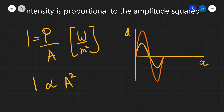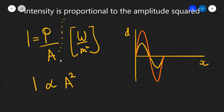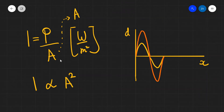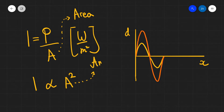Notice that unfortunately the symbol for area is exactly the same as the symbol for amplitude, and it will be really important not to confuse the two. In the equation above, A stands for area, and in the second equation — that intensity is proportional to the amplitude squared — this A stands for amplitude.